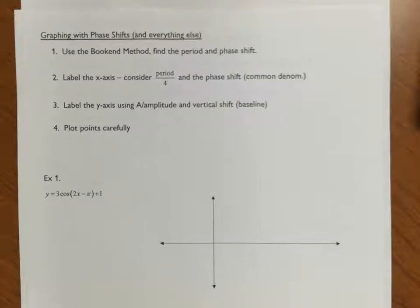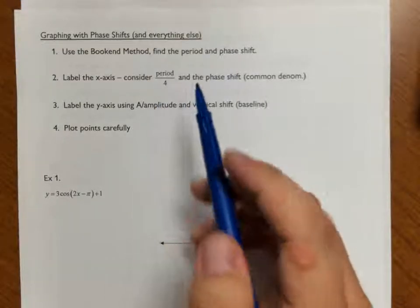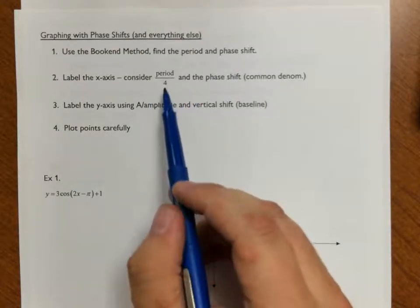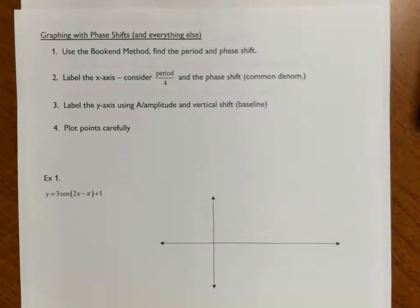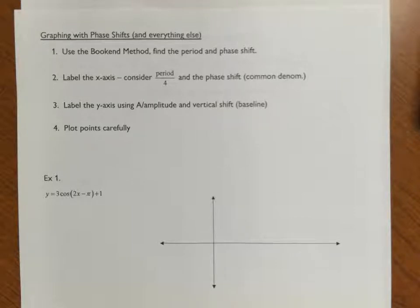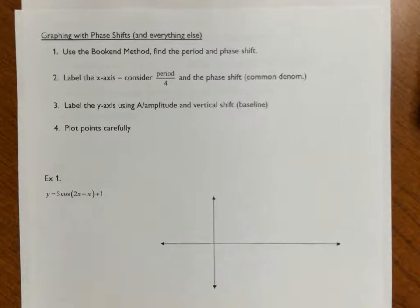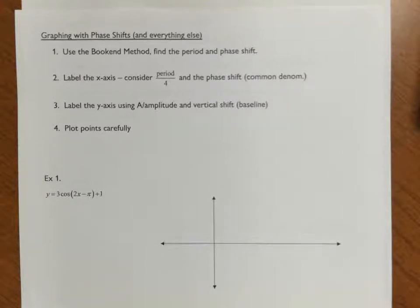In your second step, you will be labeling the x-axis. You'll need to always divide the period into four subintervals — that's period divided by four — plus whatever the phase shift is. This will require a common denominator, which in some cases is a little tricky. In the third step, we label the y-axis using the amplitude for sine and cosine and the vertical shift, which gives us a new baseline. In step four, you plot the points carefully — I'm going to show you how to do that without a table of values.